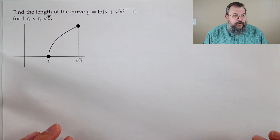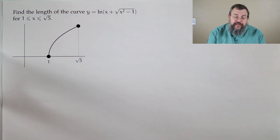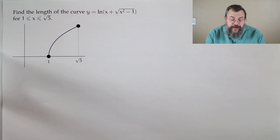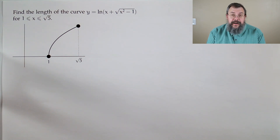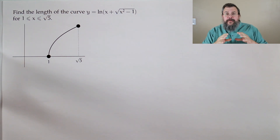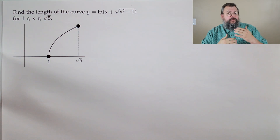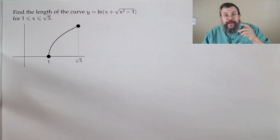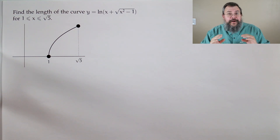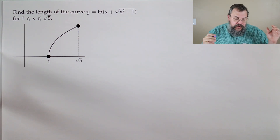This next problem looks interesting — find the length of the curve y equals the natural log of (x plus the square root of x squared minus 1), for x going from 1 to root 5. Our initial reaction seeing this function is panic, but remember: we don't have to integrate the function itself, we have to take its derivative. A really unpleasant-looking thing at the beginning is often a signal that something nice is about to happen.